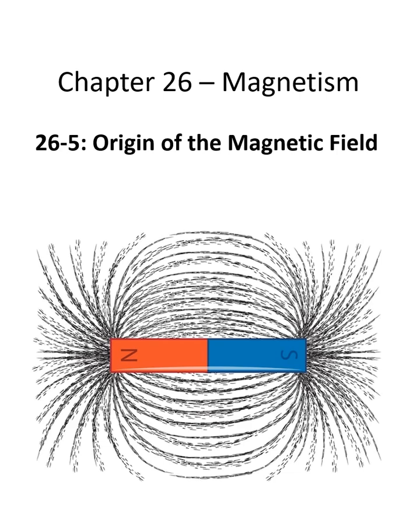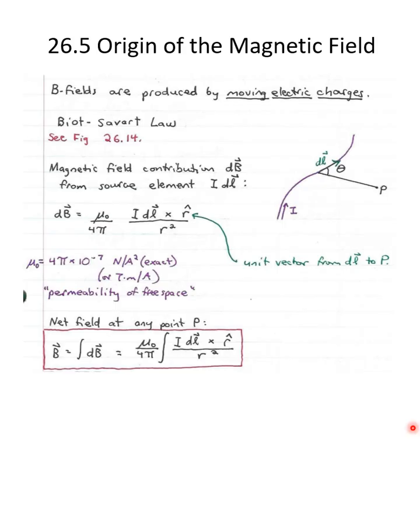Hello, welcome back. This is Chapter 26, Section 5, Origin of the Magnetic Field. Magnetic fields are produced by moving electric charges. We've already seen that electric charges respond to electric fields and electric charges produce electric fields. It's also the case with magnetism. We've previously seen how moving electric charges respond to magnetic fields, and now we're going to see how moving electric charges produce magnetic fields.